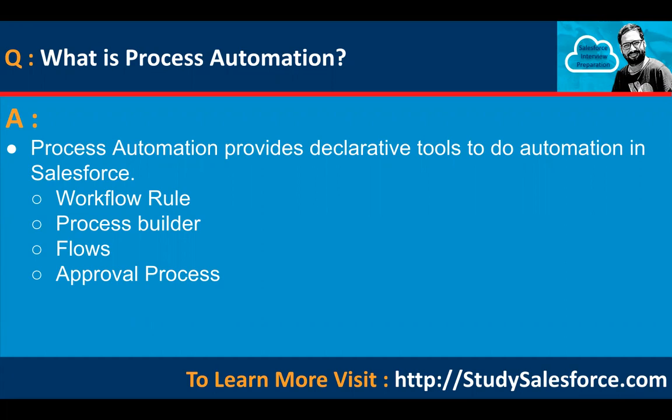Soon, workflow rules and process builder will be deprecated. So we only have flows to do automations, and approval process is specific to sending records for approval. Flow will be the future for process automation.